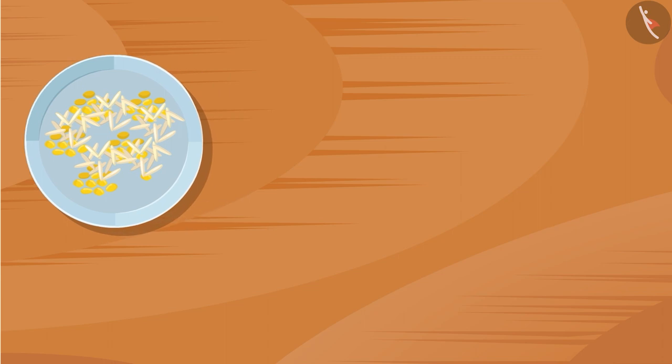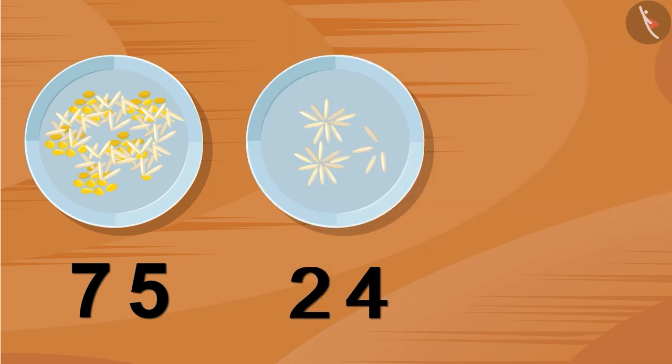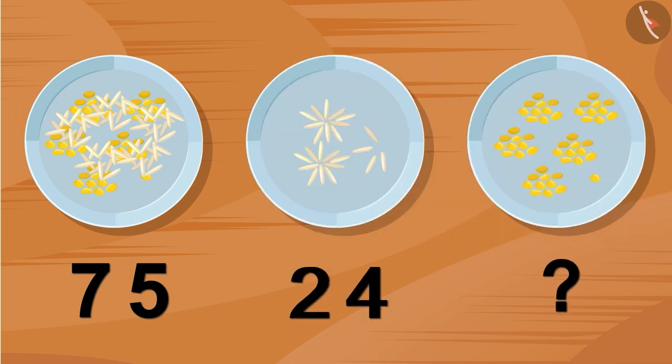Let's see in the picture. The total number of pulse and rice we have on a plate is 75. If there are 24 rice grains on that plate, then what is the number of pulses?